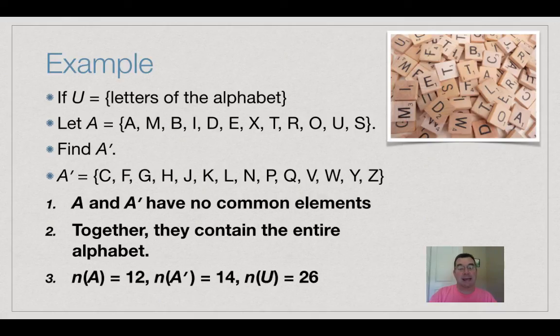The number of elements in A is 12 and the number of elements in A' is 14 and so that matches the number of elements in U being 26. So all three properties hold for my set A that I've chosen and A' which I've figured out from that.